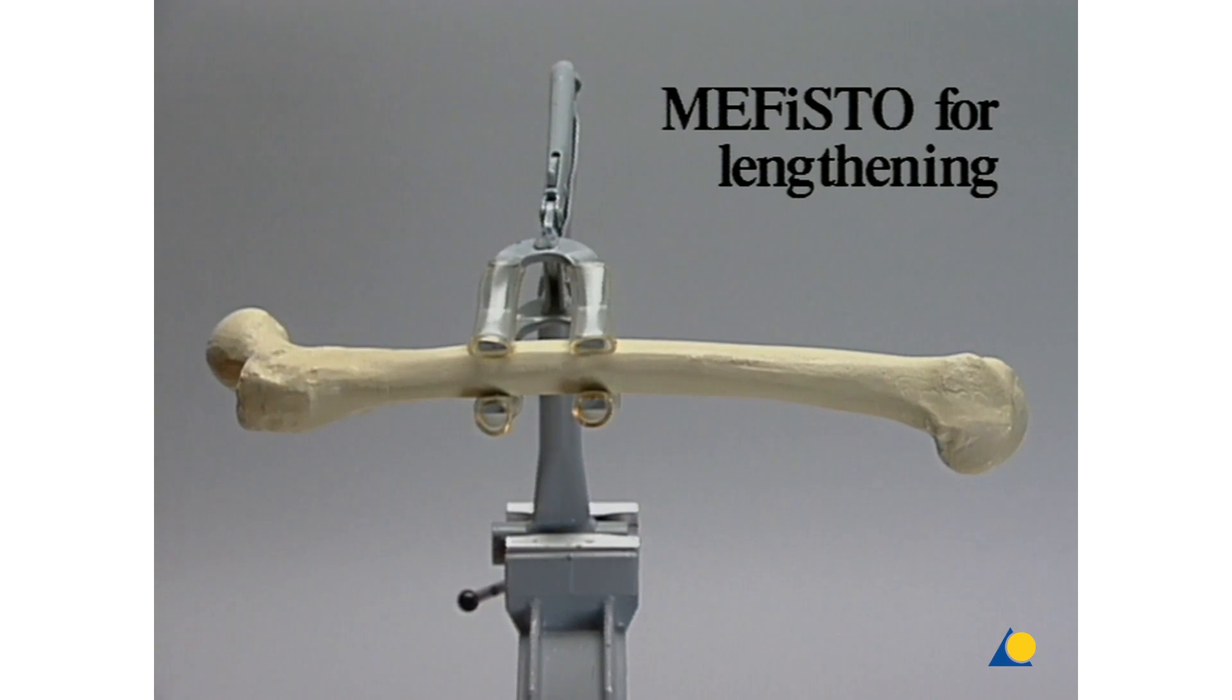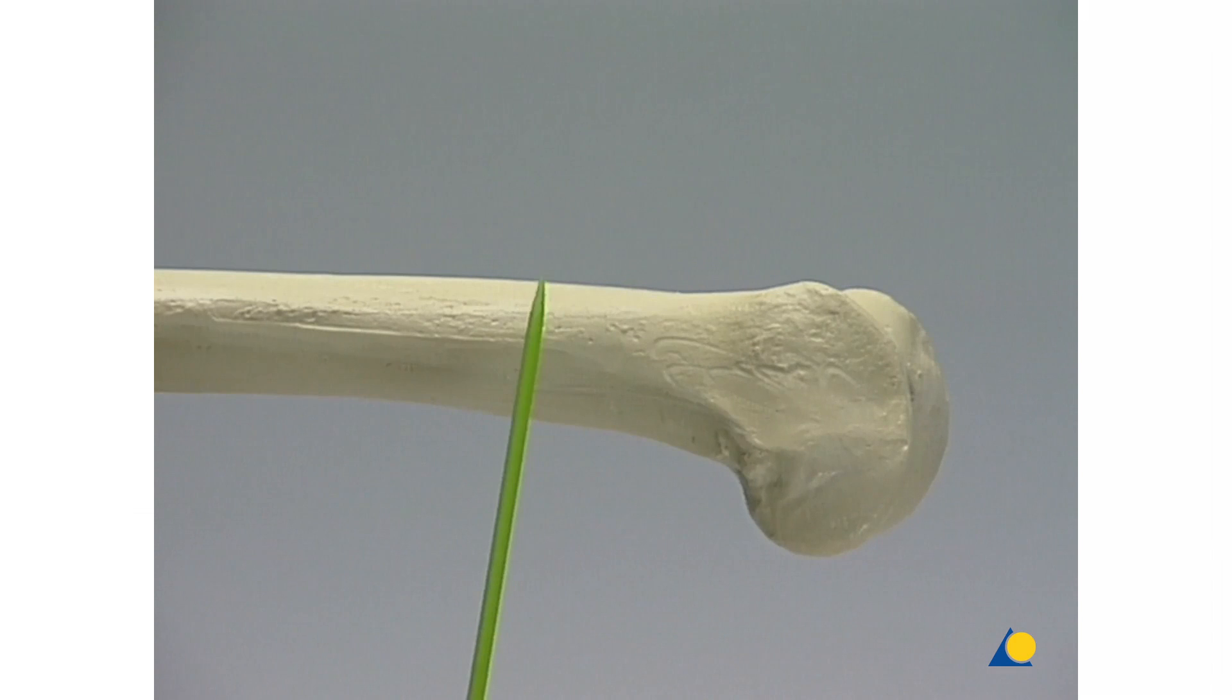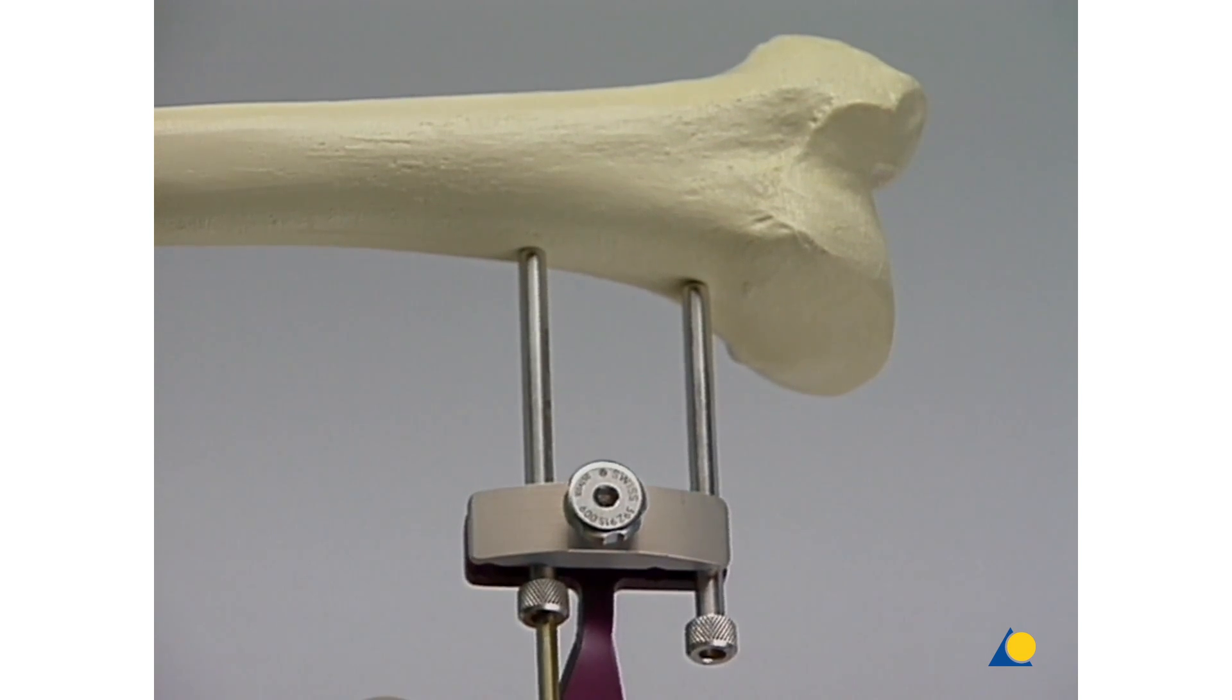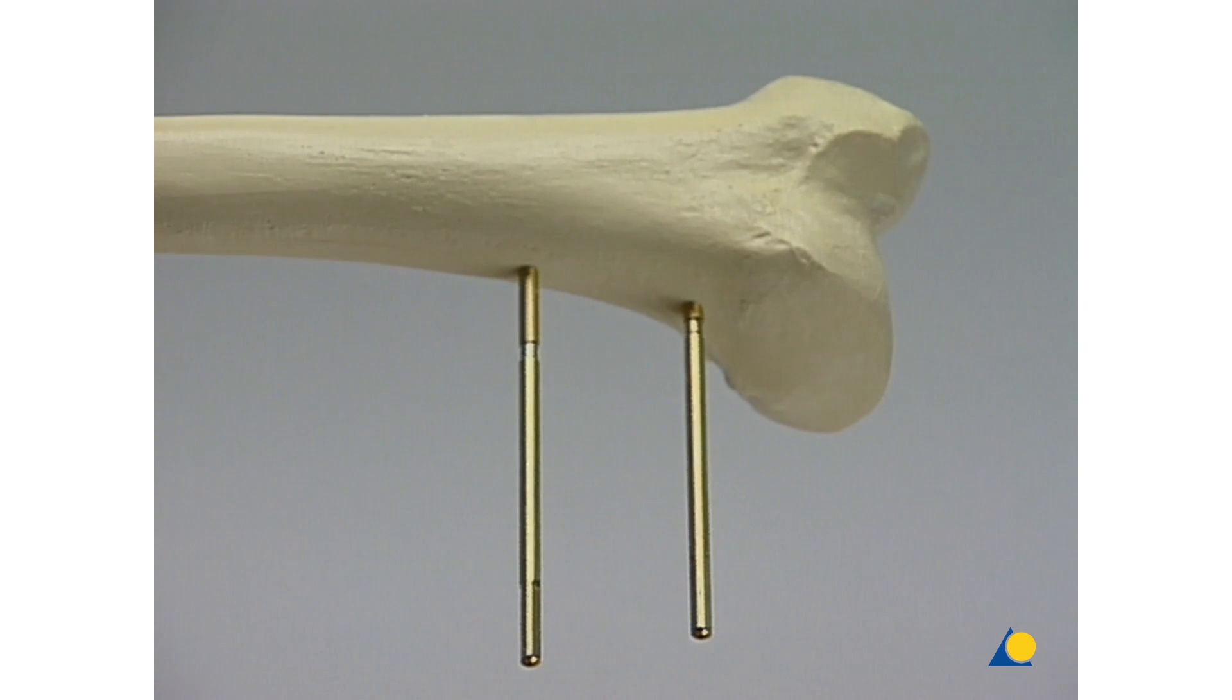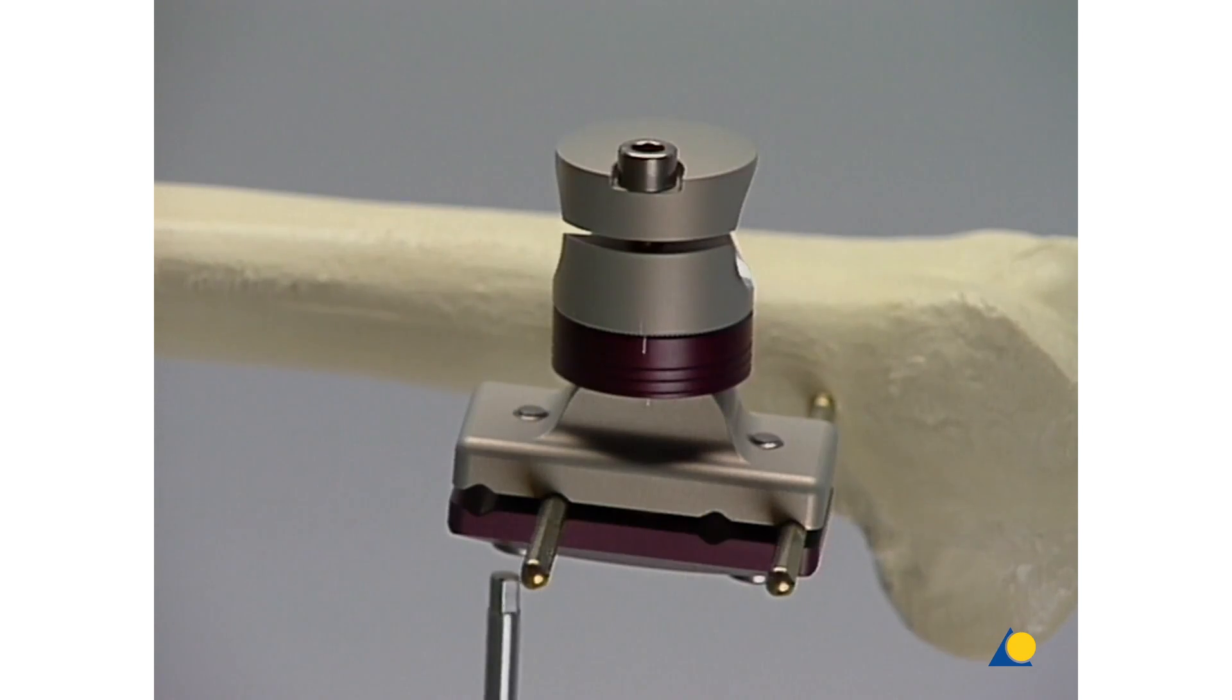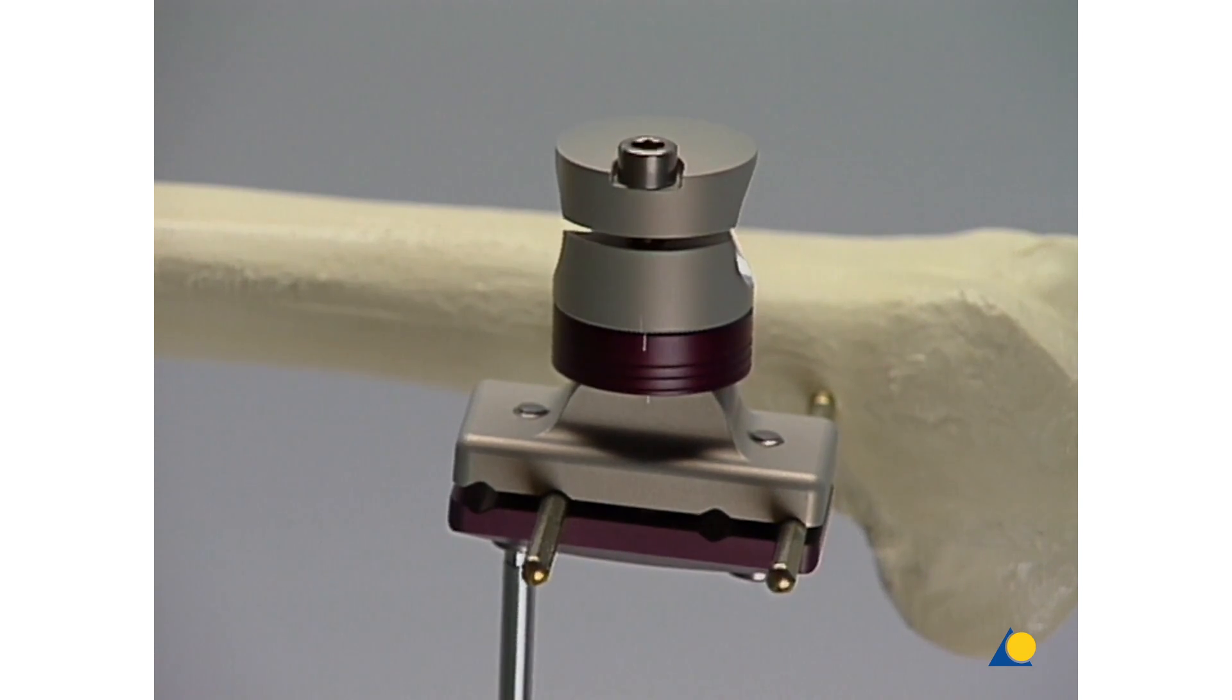Lengthening will be demonstrated on a femur with a distal corticotomy. The same principle can be used for subtrochanteric corticotomies and corticotomies in the tibia. First, two parallel shunt screws are inserted using the parallel drill sleeve holder. Then a standard clamp is mounted on the shunt screws.